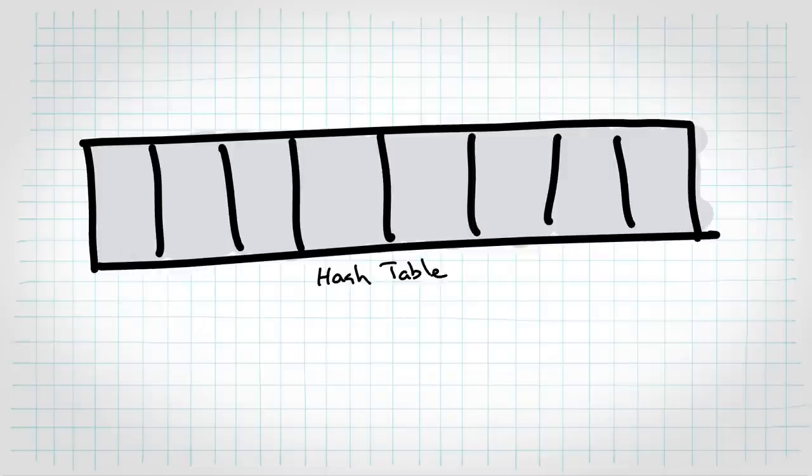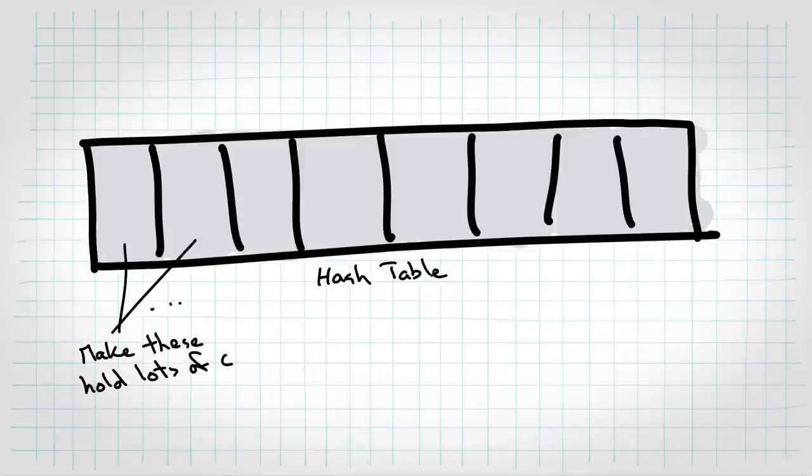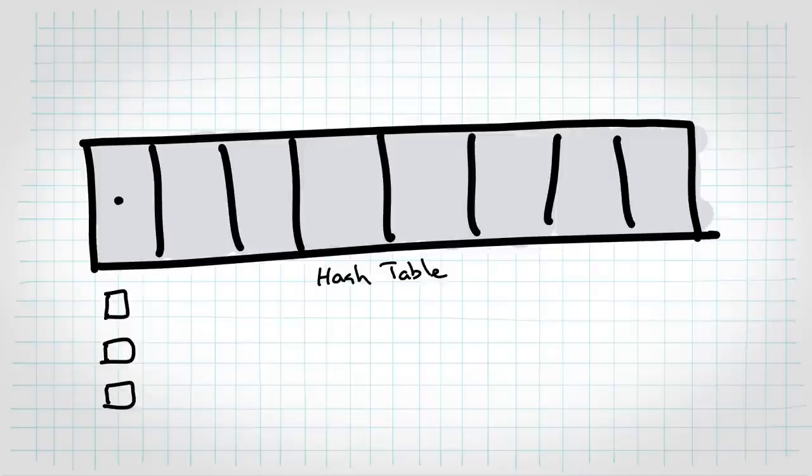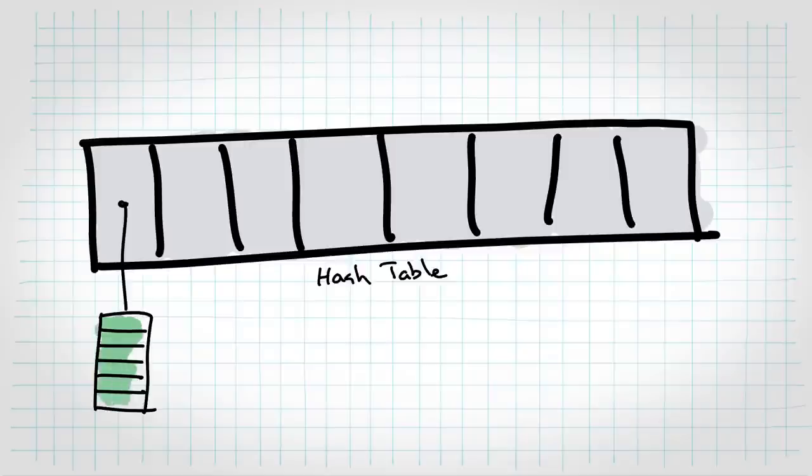Instead, you make the bucket hold a whole bunch of things. Crazy, I know. For example, you can make each of these buckets its own linked list, capable of holding a whole bunch of crap. Doesn't have to be a linked list either. There's other options. You could make this like a dynamic array. That'd work too.